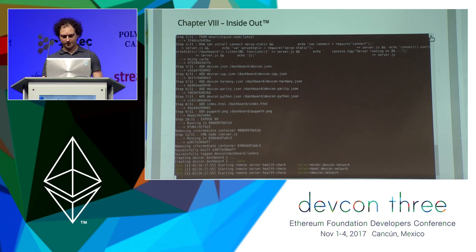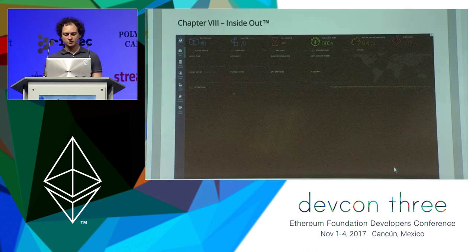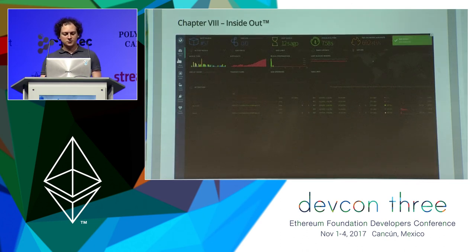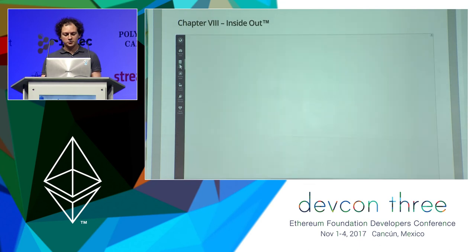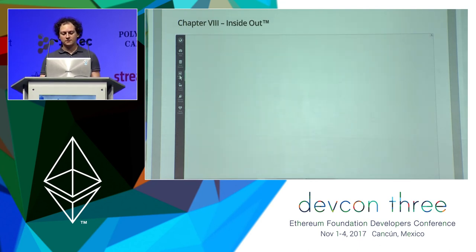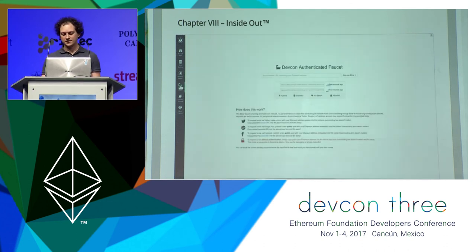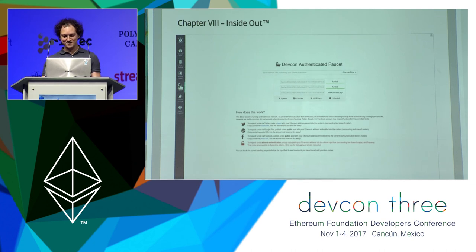If everything worked correctly, I should be able to load up a nice dashboard. And we have the first page — we have the ETH Stats. On the left-hand side, we have a nice sidebar menu where we can switch between the ETH stats, the block explorer that we just configured, our web wallet that we can play around with, and the faucet to request all the funds. And people are already requesting funds — amazing.